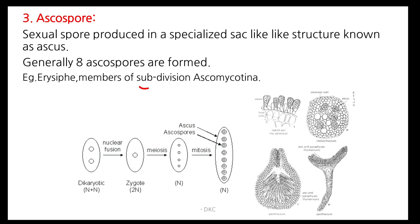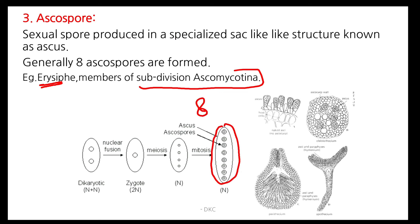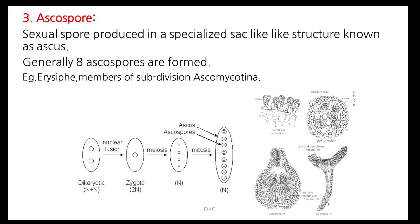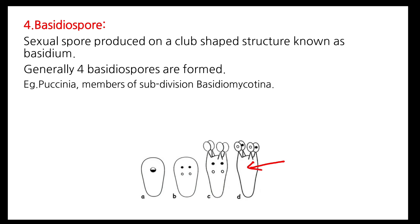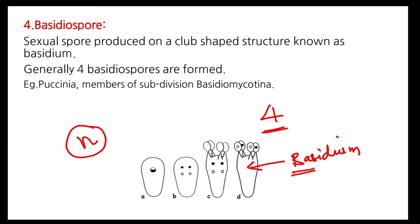Ascospores are formed in subdivision Ascomycotina, such as Erysiphe. Generally one ascus contains 8 ascospores, and these ascospores are haploid (N). Ascospores are formed inside fruiting bodies such as cleistothecia (closed fruiting body), perithecia (pear-shaped fruiting body), or apothecia (cup-shaped fruiting body). Basidiospores are formed in subdivision Basidiomycotina, inside the basidium — the swollen part. Generally one basidium produces 4 basidiospores, and these are also haploid (N).